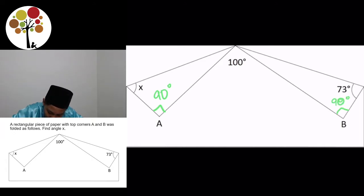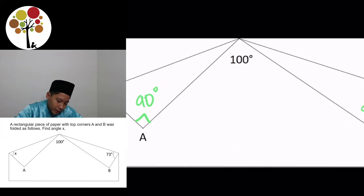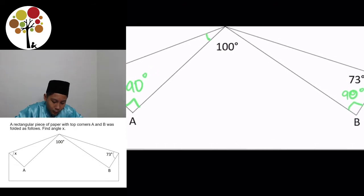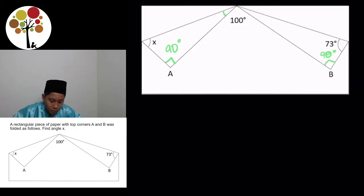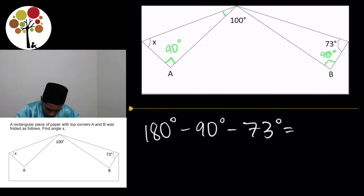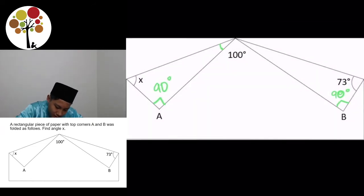90 degrees. Okay, so what we are trying to do is find angle X. So, in order to find angle X, we have to find this angle over here. In order to find that, we need first to find out the top corner of triangle B, which is equal to 180 degrees minus 90 degrees minus 73 degrees, which is equal to 17 degrees. So, here is 17 degrees.